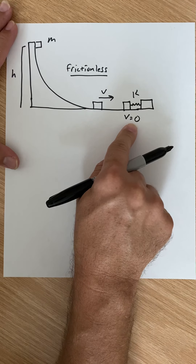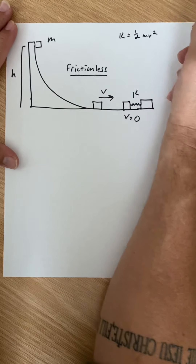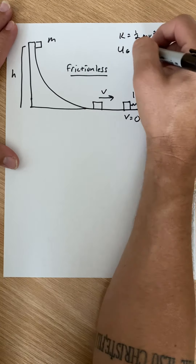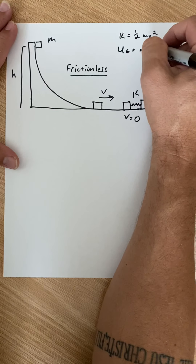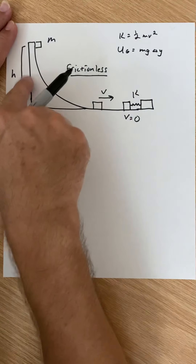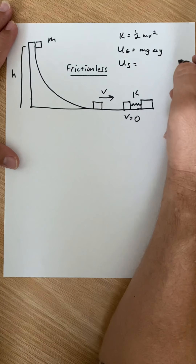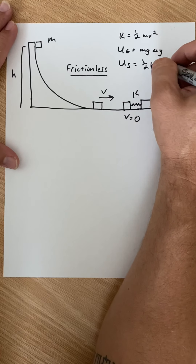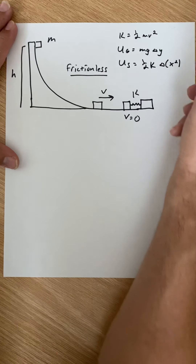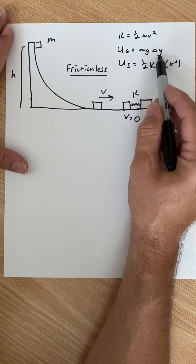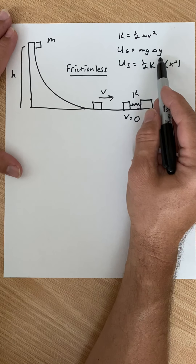To remind ourselves of what we have: kinetic energy is one-half mv squared, gravitational potential energy is mg delta y — we'll probably use h here — and spring potential energy is one-half k delta x squared, though we'll probably just use x squared. We'll use h because of how I set the zero point.